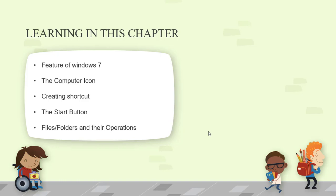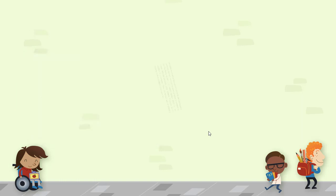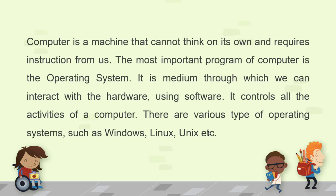We will discuss the features of Windows 7, how to start Windows 7, and what is the Start menu. A computer is a machine that cannot think on its own and requires instructions from us. The most important program of a computer is the operating system. It is the medium through which we can interact with the hardware using software. It controls all the activities of a computer. There are various types of operating systems such as Windows, Linux, Unix, etc.